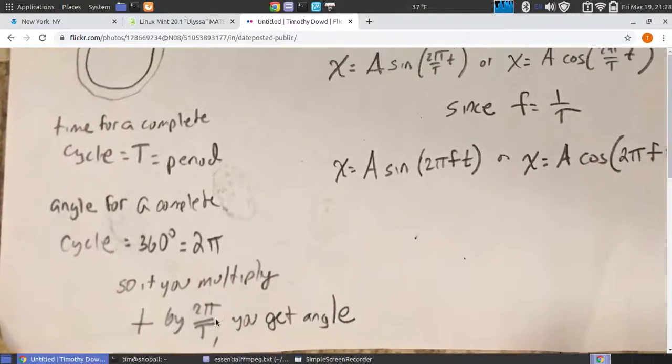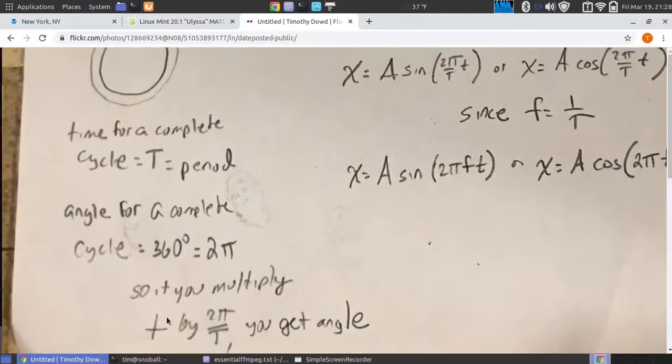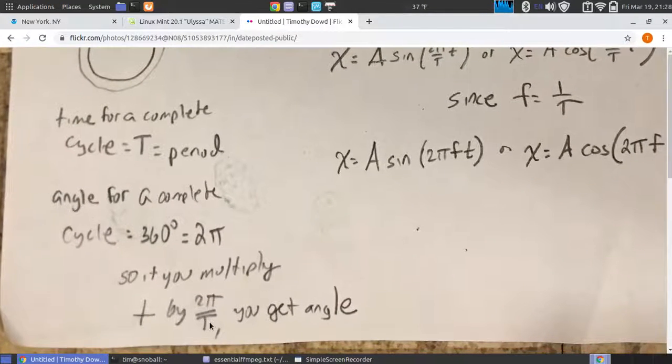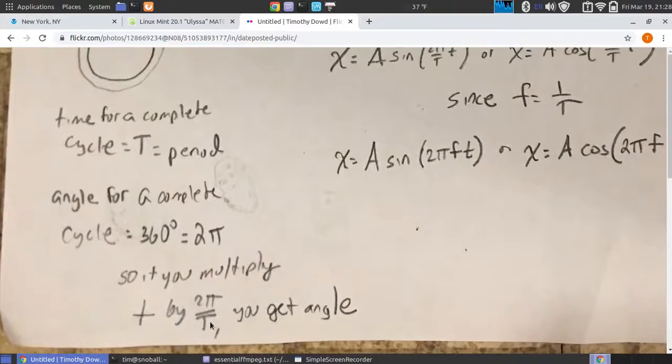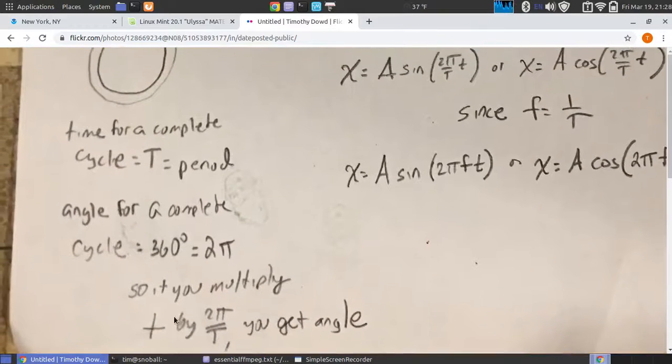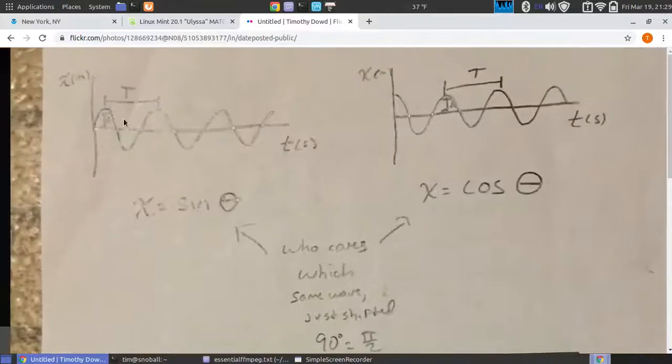So 2π over period is a unit conversion. If you multiply time by that factor, time in seconds is cancelled out by period in seconds, and you're left with the fraction of the cycle you've completed.